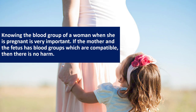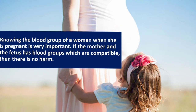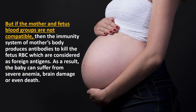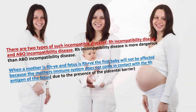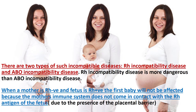Knowing the blood group of a woman when she is pregnant is very important. If the mother and the fetus have compatible blood groups, there is no harm. But if their blood groups are not compatible, the mother's immune system produces antibodies to kill the fetal RBCs, which are considered foreign antigens. There are two types of such incompatible diseases: RH incompatibility disease and ABO incompatibility disease. RH incompatibility disease is more dangerous than ABO incompatibility disease.